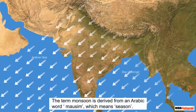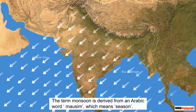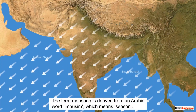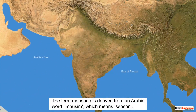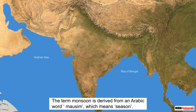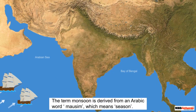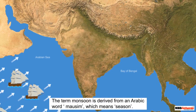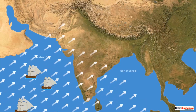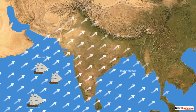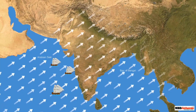The term monsoon is derived from an Arabic word 'mousim', which means season. In olden days, sailors found this wind convenient to set their sails in the direction of the wind, saving their fuel and time by doing so.